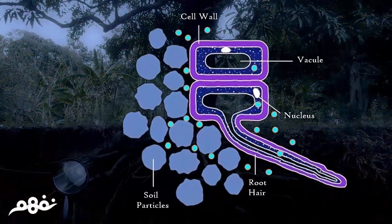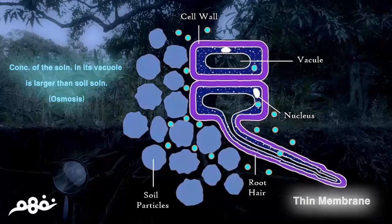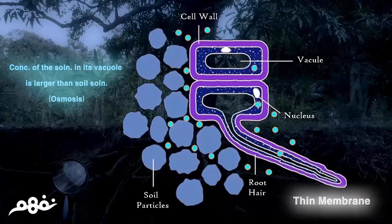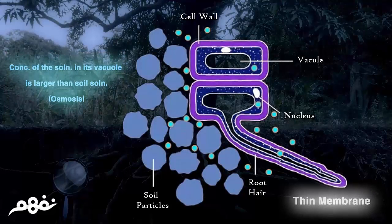If we look at a root hair, we note that it is lined from the inside with a thin layer of cytoplasm and has a large vacuole. It also has a thin membrane that allows penetration of water and salts through it, and it secretes a sticky substance to enable it to penetrate the soil.